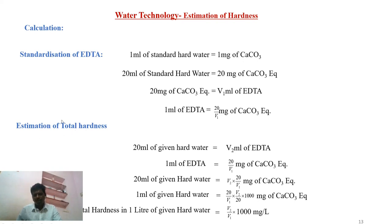Estimation of total hardness calculation: 20 ml of given hard water consumed V2 ml of EDTA. We know 1 ml of EDTA equals 20/V1 mg of calcium carbonate. So, 20 ml of given hard water equals V2 × (20/V1) mg of calcium carbonate. Therefore, 1 ml of sample hard water equals (20/V1) × (V2/20) × 1000 mg per litre. The 20s cancel, giving V2/V1 × 1000 mg per litre of calcium carbonate. This is the total hardness.